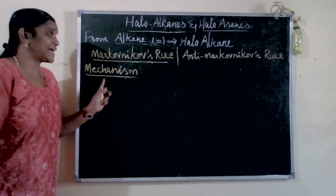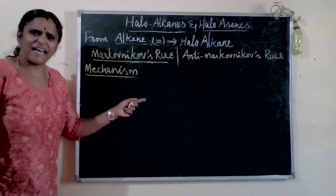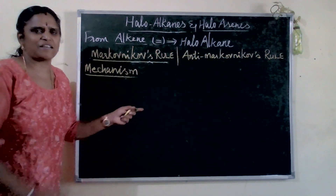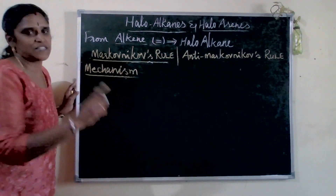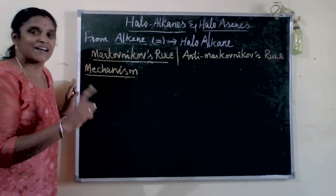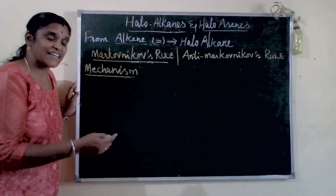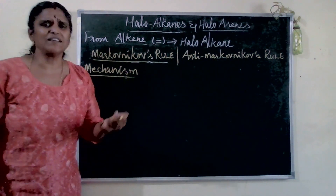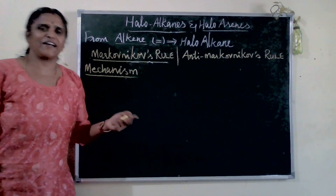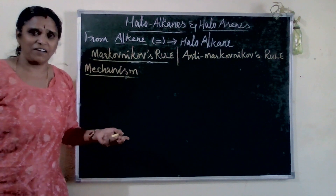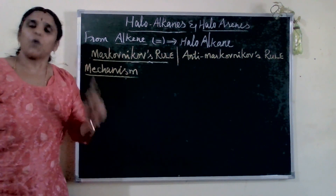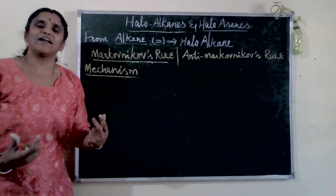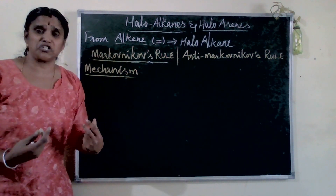The mechanism of Markovnikov's rule has two steps. Step one is formation of a carbocation. Step two is attack by the electrophile. What is an electrophile? An electrophile is electron-poor — that is, electron deficient. A nucleophile, on the other hand, is electron-rich.